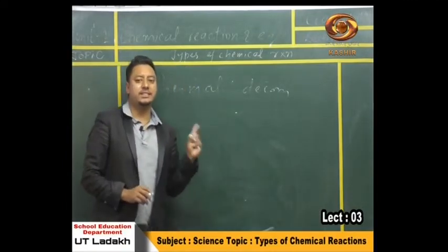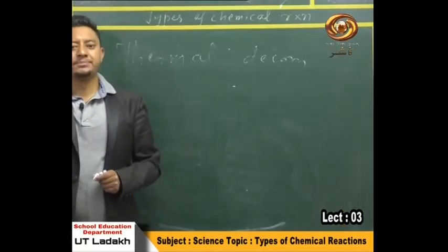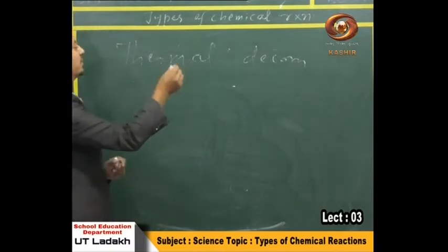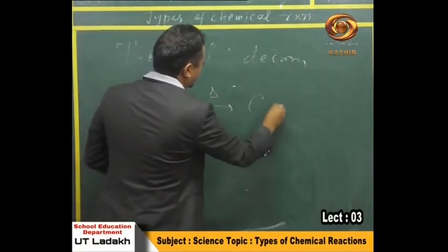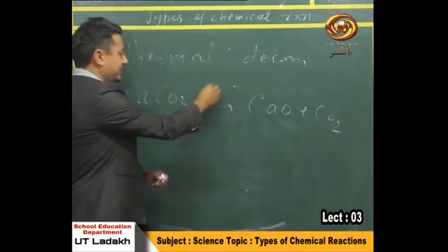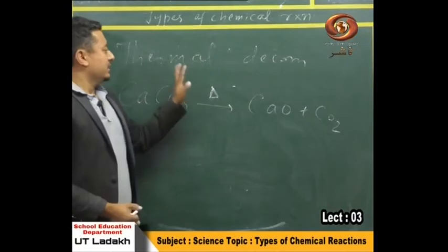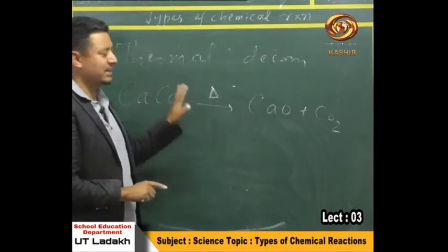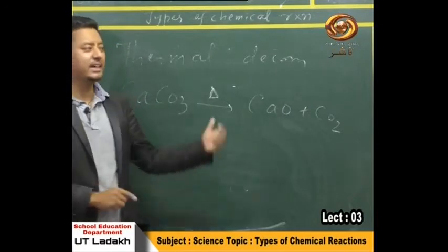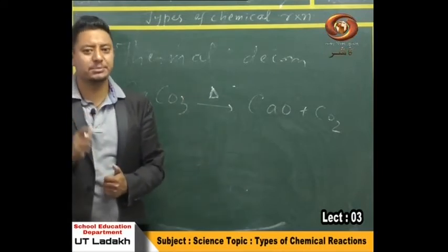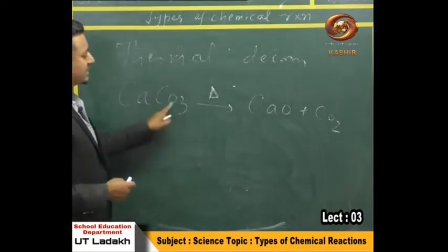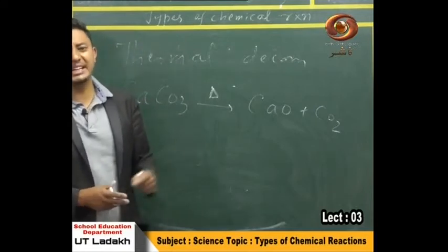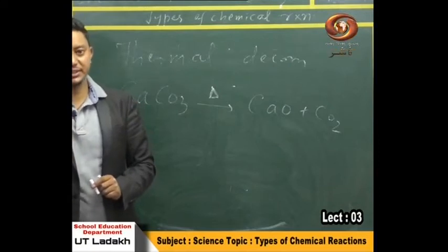In thermal decomposition, all three sub-types involve decomposition — one reactant broken into two or more products. In this reaction, calcium carbonate on heating gives calcium oxide plus carbon dioxide. The delta symbol represents heat. Those decomposition reactions which happen in the presence of heat or heat energy are known as thermal decomposition reactions. Heat is required as the reaction criterion; otherwise the reaction would not proceed.